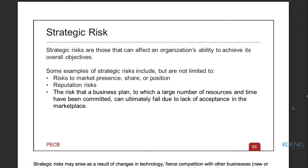Starting with strategic risk: strategic risks are those that can affect an organization's ability to achieve its overall objectives. Some examples include risks to market presence, share, or position; the biggest of them all — reputation risks; and the risk that a business plan to which a large number of resources and time have been committed can ultimately fail due to lack of acceptance in the marketplace.